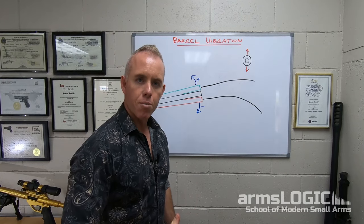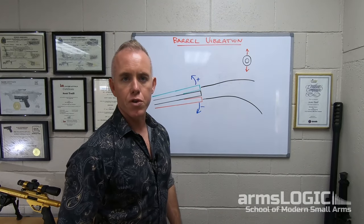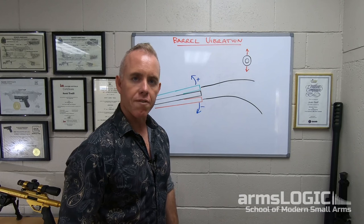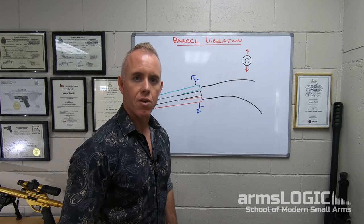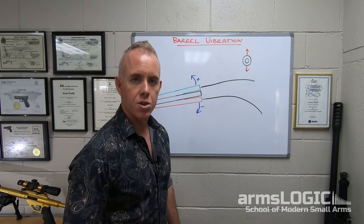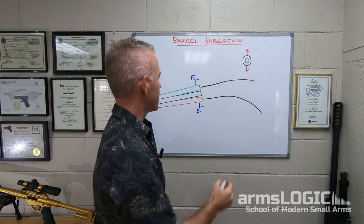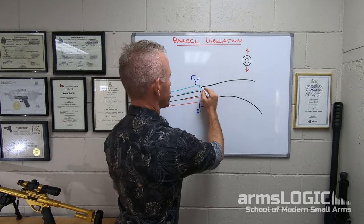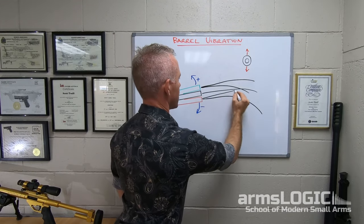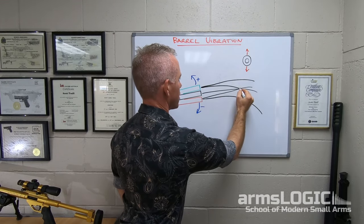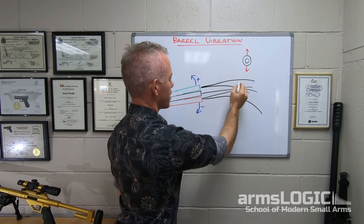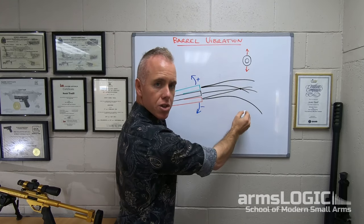This barrel vibration is sometimes referred to as harmonics or whip. And when we learn about the factors that affect vibration, we'll see that they can be altered in an effort to achieve convergence rather than divergence.